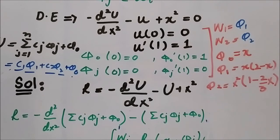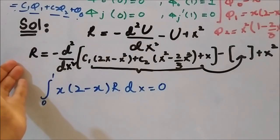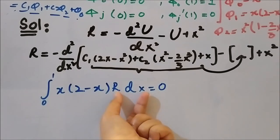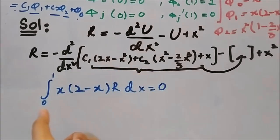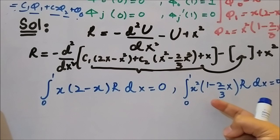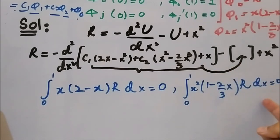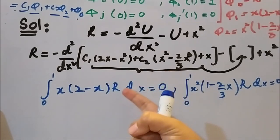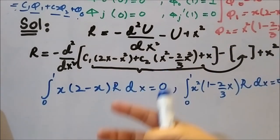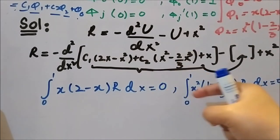Let's write the two integral statements after plugging phi1, phi2, phi0, w1, and w2. The first weighted residual integral is w1 times r, integrated dx over the domain 0 to 1, equal to 0. The second integral is w2 times r, integrated dx, equal to 0 — where w2 equals x² times (1 − 2/3x), which is phi2. If we plug residual r in and simplify both integrals, we are left with two linear equations.